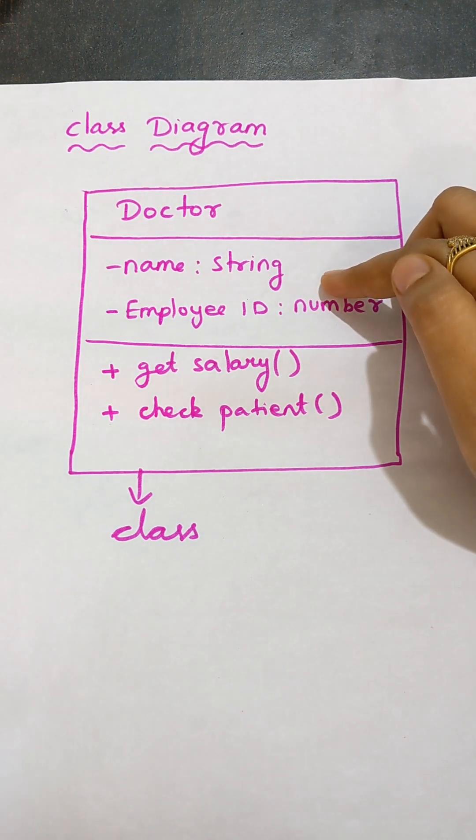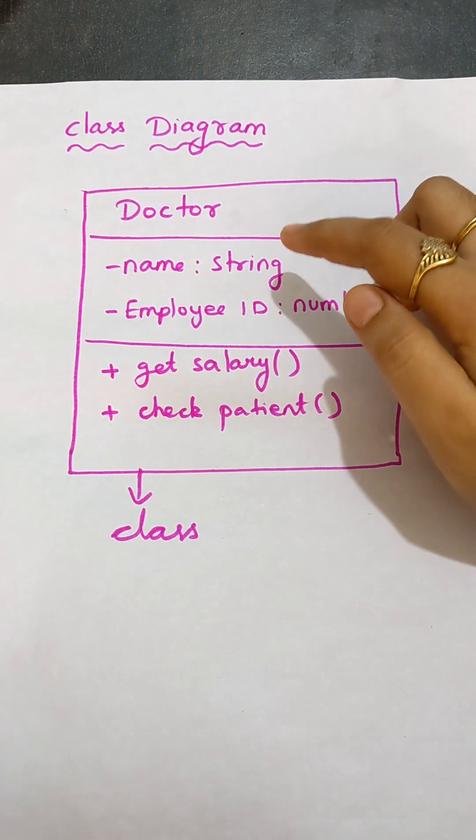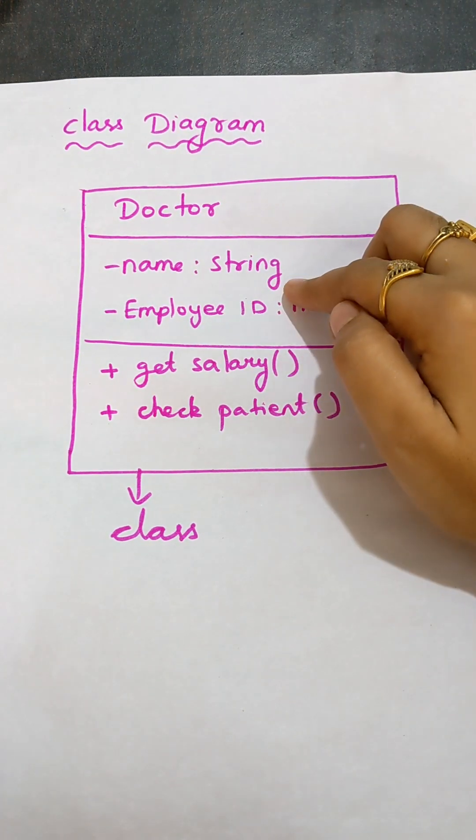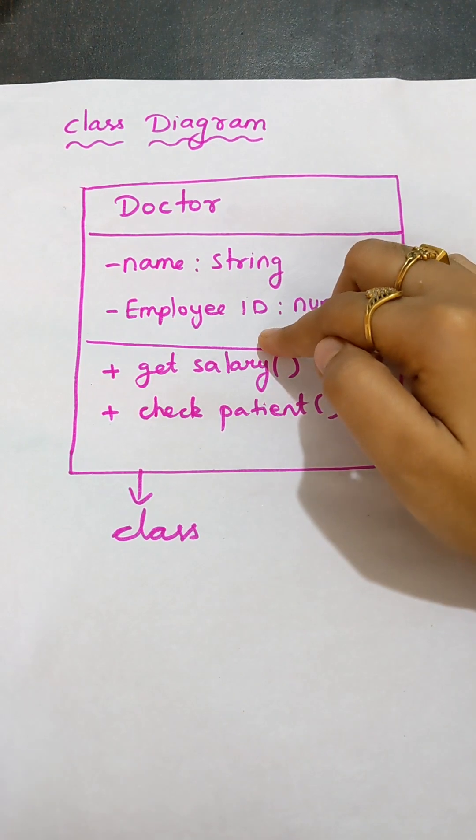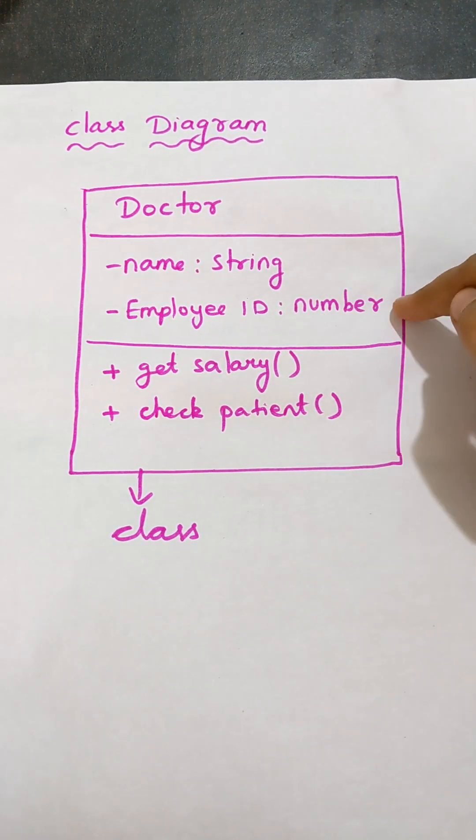In the second box, I need to write the attributes - the characteristics of the object. Doctor will have a name, which is string type because it is alphabetic. Doctor will have employee ID, which is number type because employee ID contains numbers.